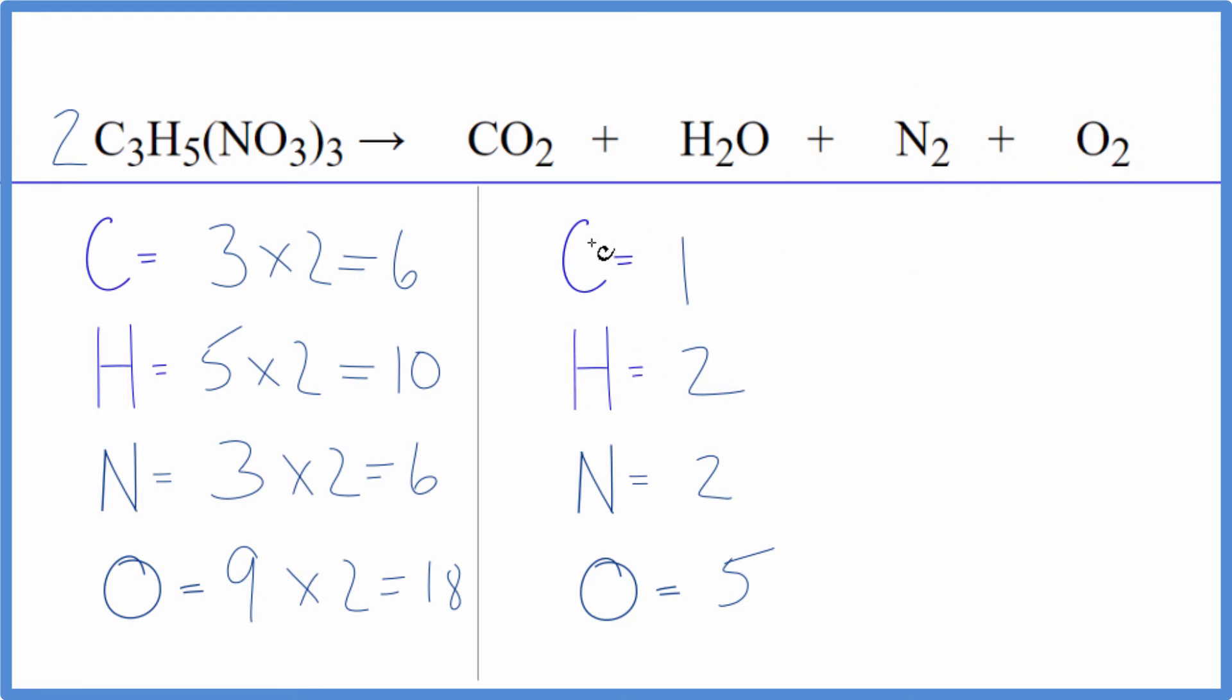Let's just first do the carbon. We can put a six in front of the CO2, one times six, that would balance the carbons. We have six of those. And then for the oxygen we need to change that, six times two, that's twelve, thirteen plus two, fifteen oxygen atoms.